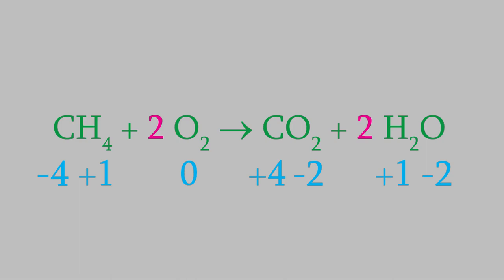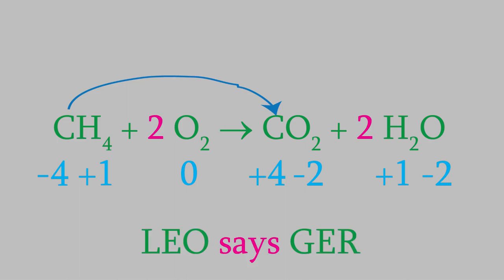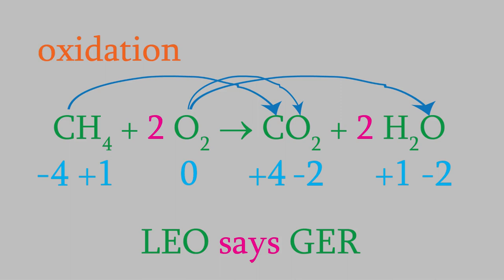Which element was reduced, and which was oxidized? The carbon went from a charge of minus four to plus four, so it lost electrons. If you remember LEO says GER, you'll know that since it lost electrons, the carbon was oxidized. Meanwhile, the oxygen went from a charge of zero to minus two, so it gained electrons, and that means the oxygen was reduced. Notice that in this example, the oxygen ended up in two different molecules on the product side — that doesn't change anything. The important thing is that the charge on the oxygen went down, which is all that matters for deciding whether it was reduced or oxidized.